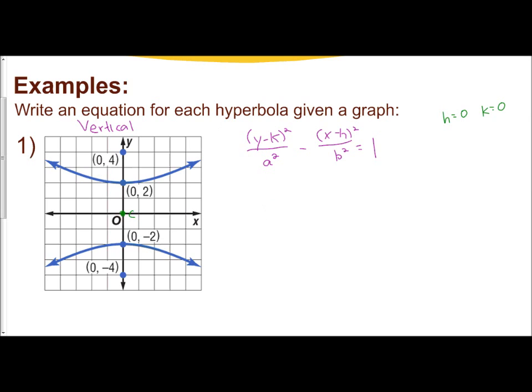So then I have the formula so far, y minus 0 squared, I don't know a squared yet, and I have x minus 0 squared, I don't know b squared yet, and I have 1.